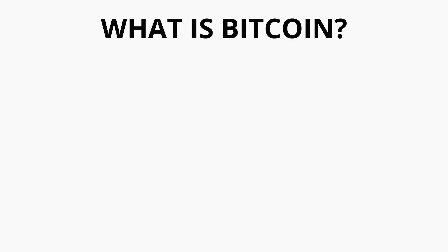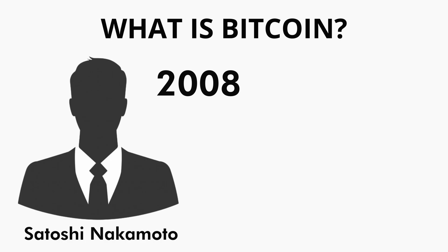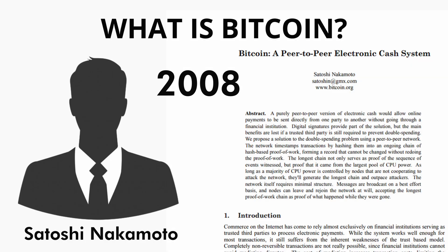Bitcoin was invented in 2008 by Satoshi Nakamoto. A white paper was published under the name Satoshi Nakamoto in 2008 which explained the whole system in lots of detail — many ideas we talked about in section 1 and many ideas we will talk about in section 2. Then in 2009 the Bitcoin system was implemented.